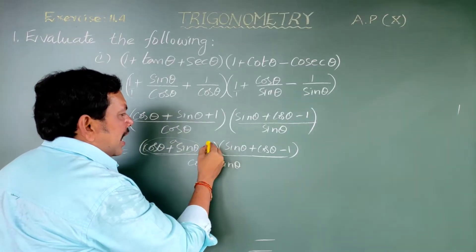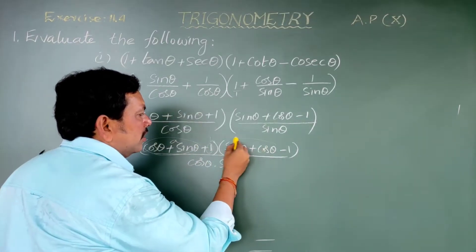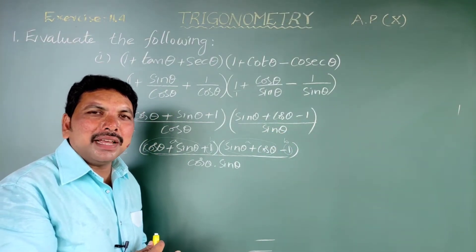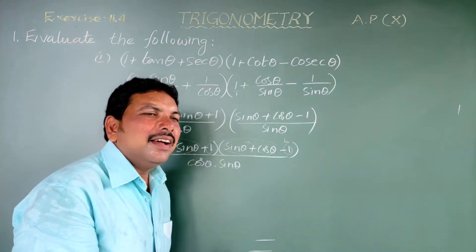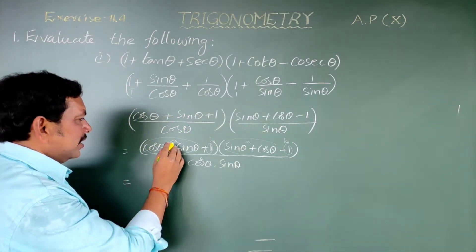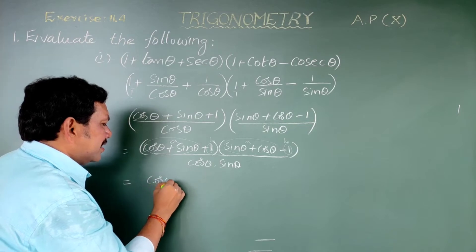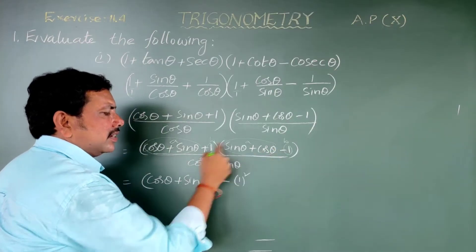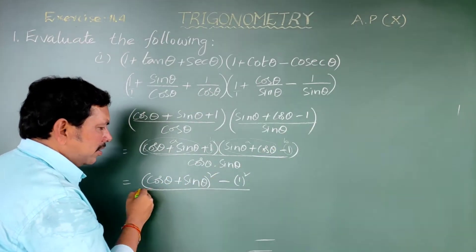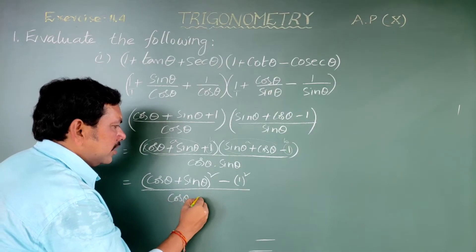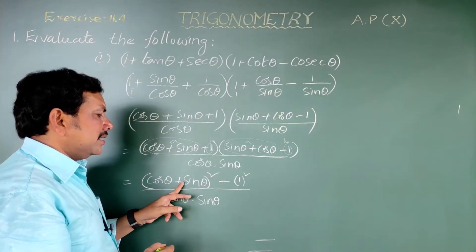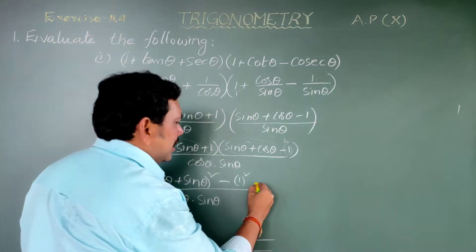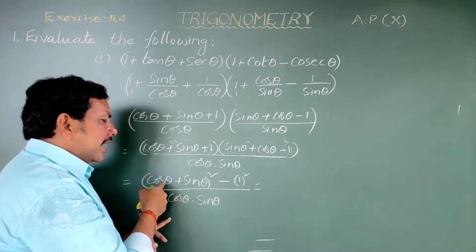The formula for (a+b)(a-b) is a squared minus b squared. So this becomes: (cos theta plus sin theta) whole square minus one square, divided by cos theta into sin theta. That is, (cos theta plus sin theta)² minus 1, divided by cos theta times sin theta.